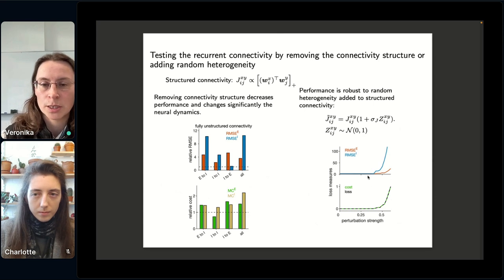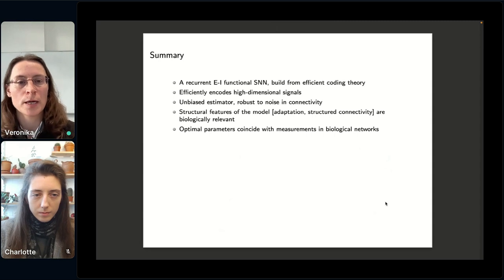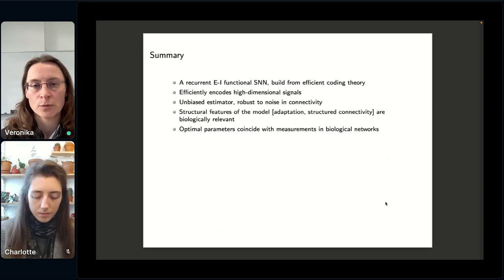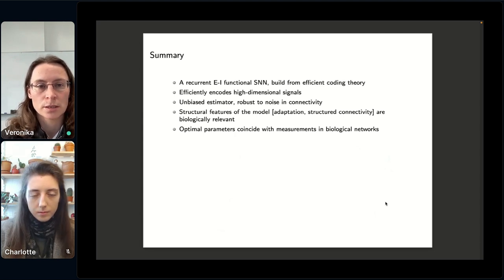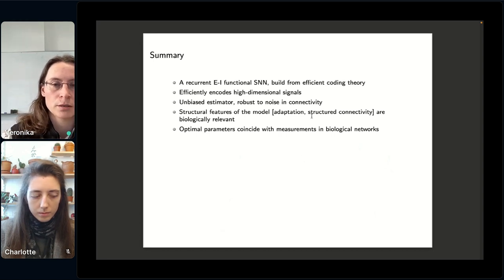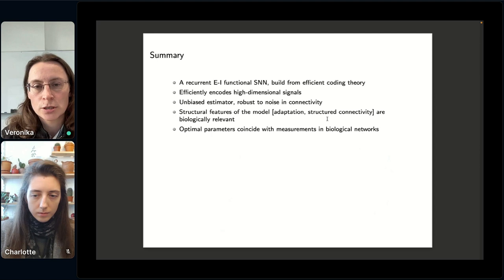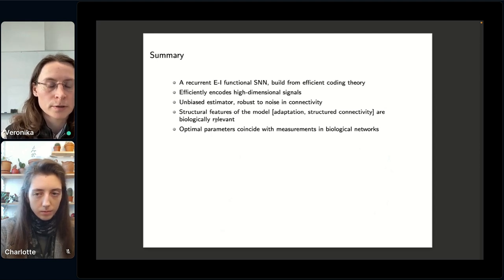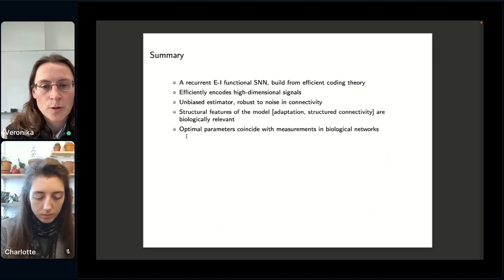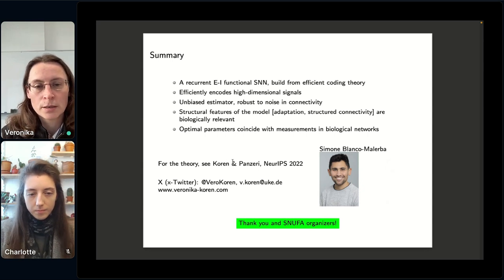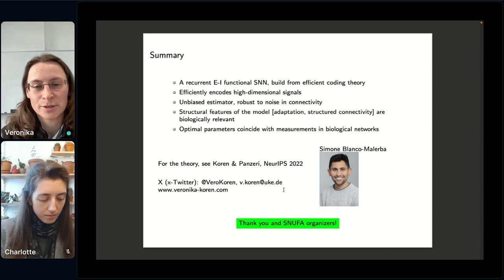Okay, so to sum up, I have described a recurrent EI spiking neural network, which is built from efficient coding theory. The model encodes high dimensional signals. It's an unbiased estimator. It's robust to heterogeneity in the synaptic connectivity. And the structural features that are analytically derived, such as adaptation or structured connectivity, I think are relevant for biology. And interestingly, we also see that optimal parameters, they are close or coincide with what we know from biological networks. With this, if you want to know more about the theory, I would invite you to look at this paper from NeurIPS from us here, and with this, I'm open to your questions.